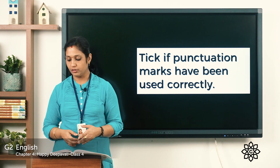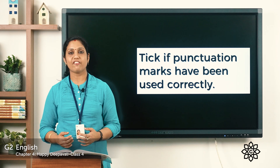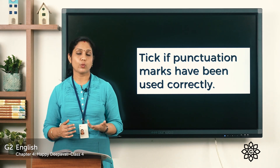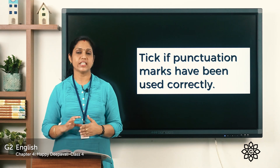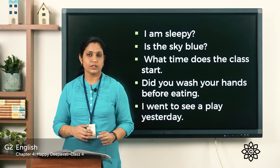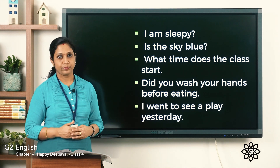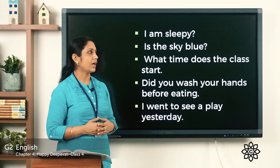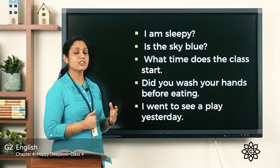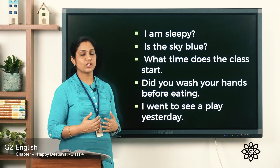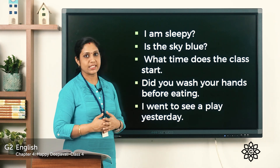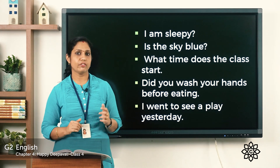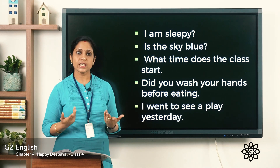Let's move on to exercise B on page number 53: tick if the punctuation marks have been used correctly. Some sentences are given with punctuation marks already inserted, and we need to check whether they are correct. The sentences are: 'I am sleepy' with a question mark; 'Is the sky blue' with a question mark; 'What time does the class start' with a full stop; 'Did you wash your hands before eating' with a full stop; 'I went to see a play yesterday' with a full stop.